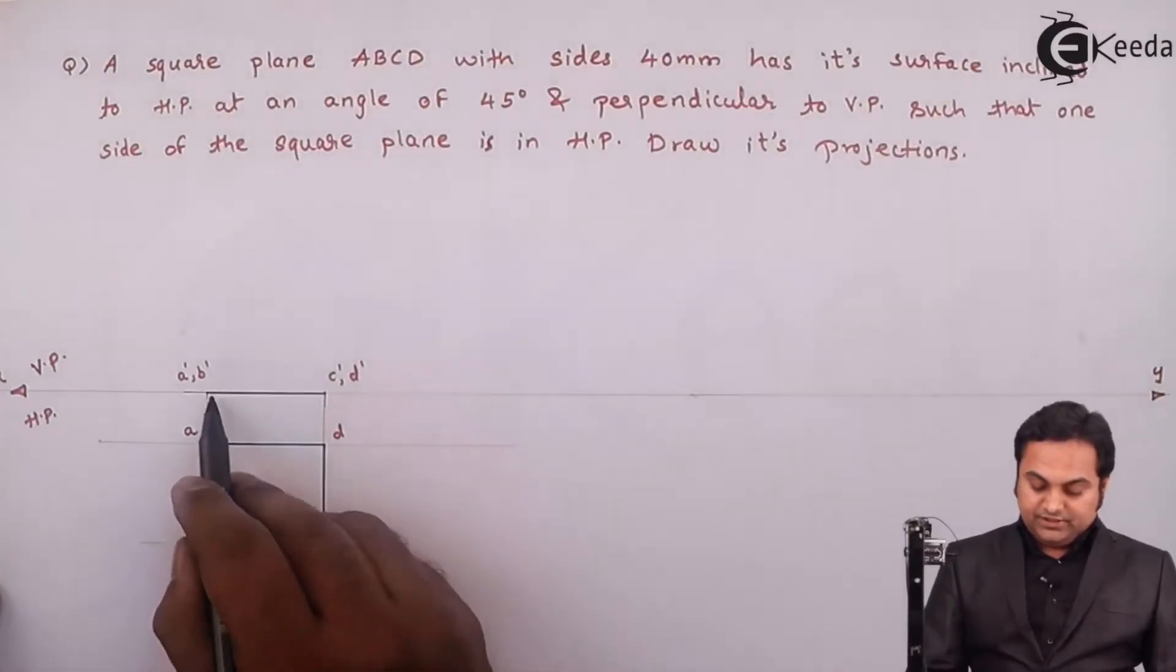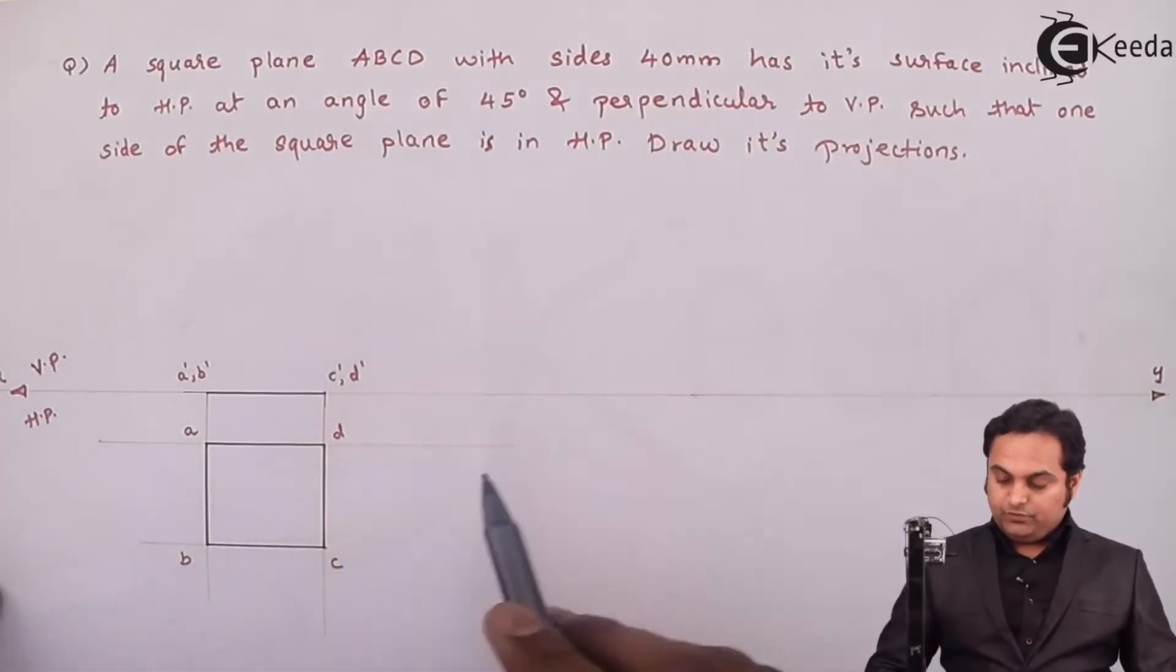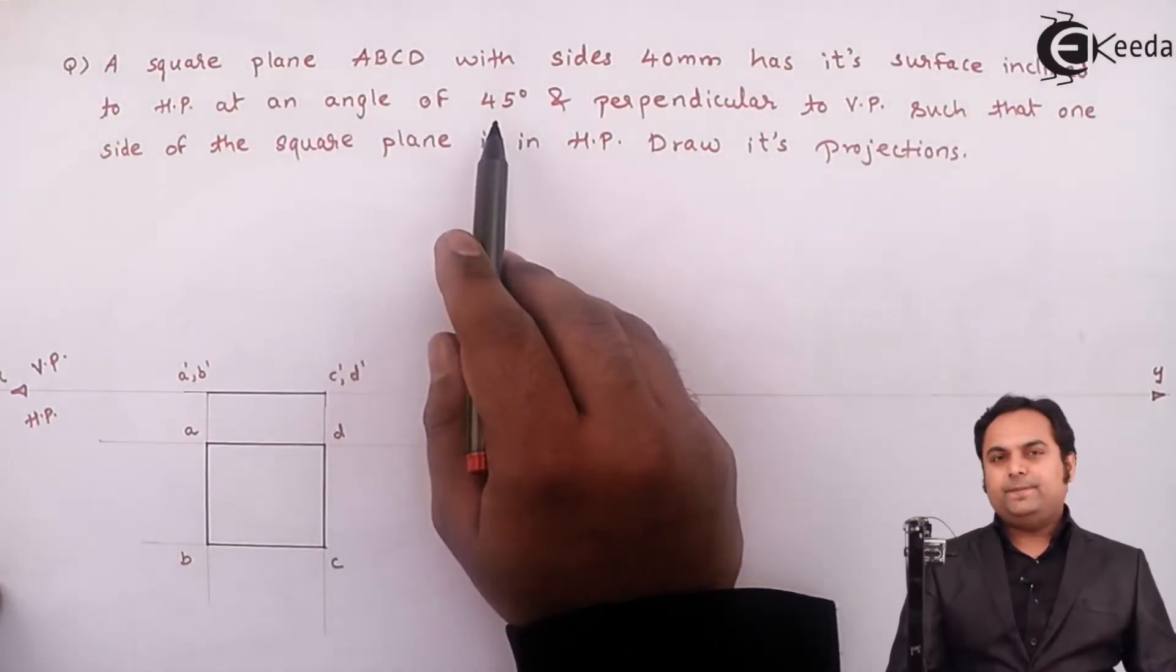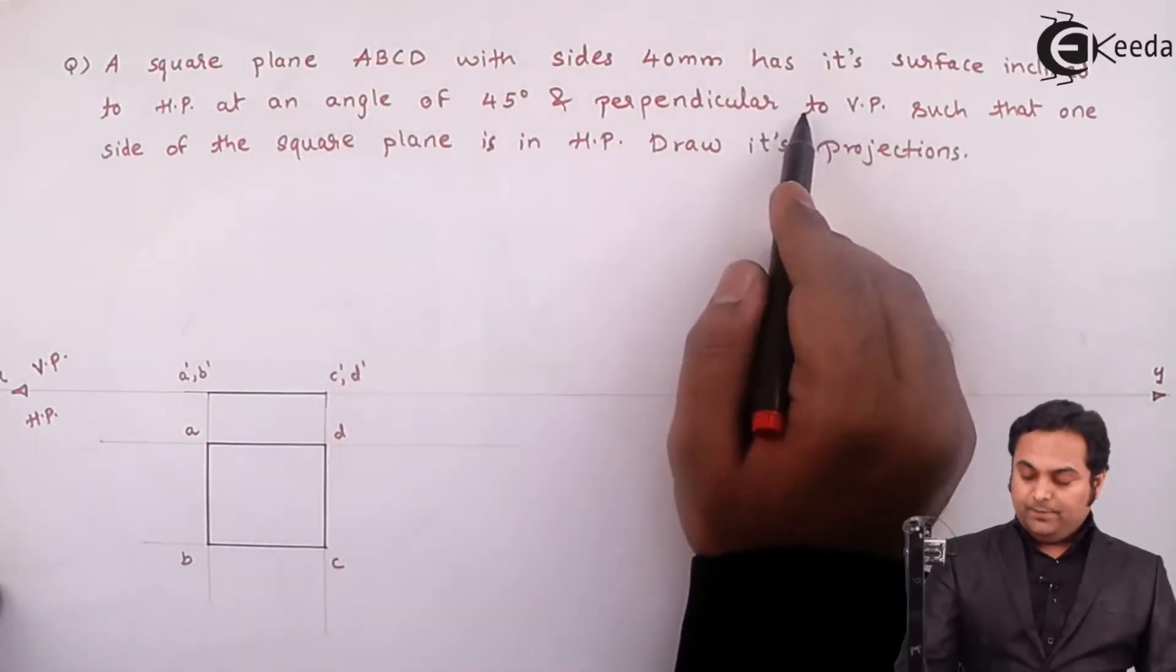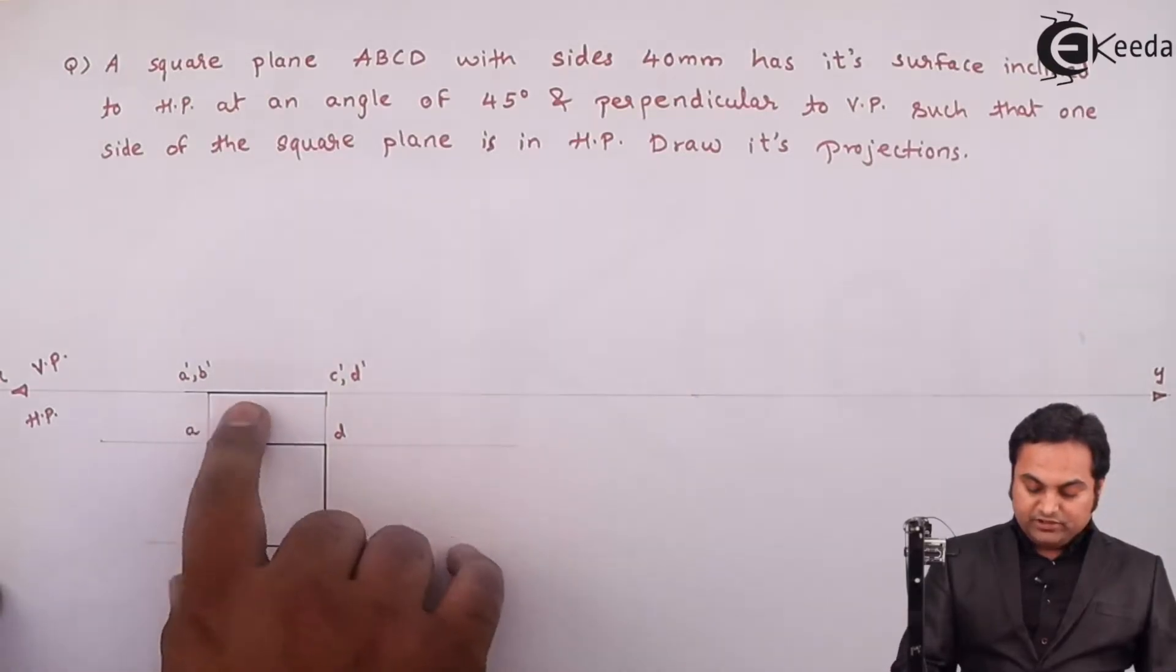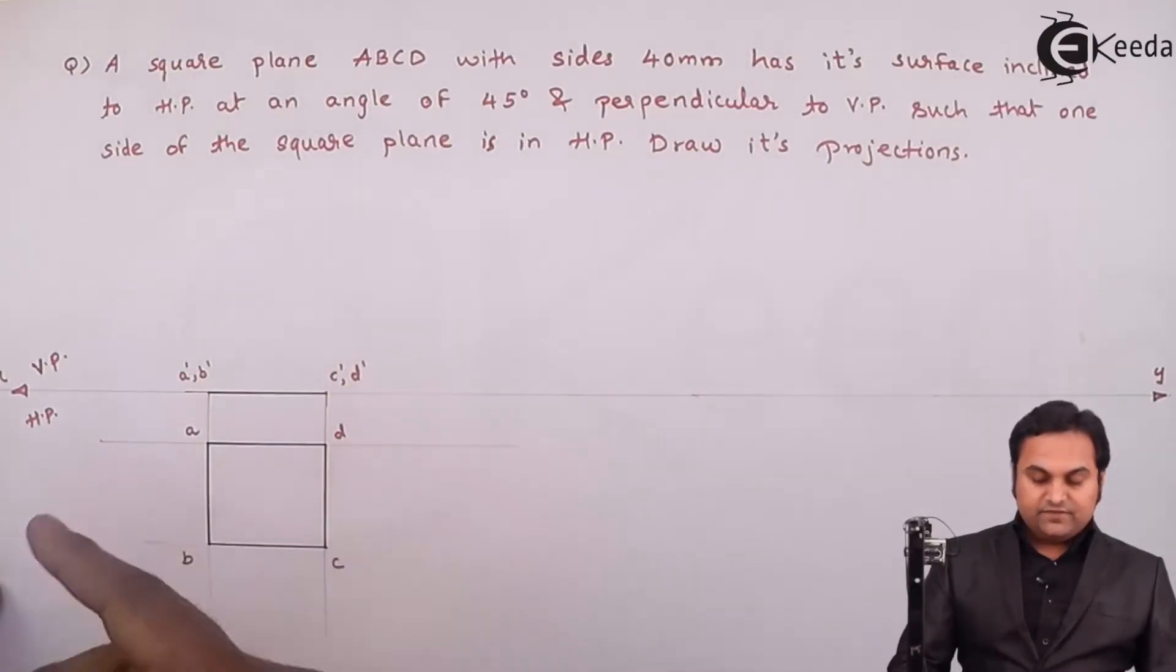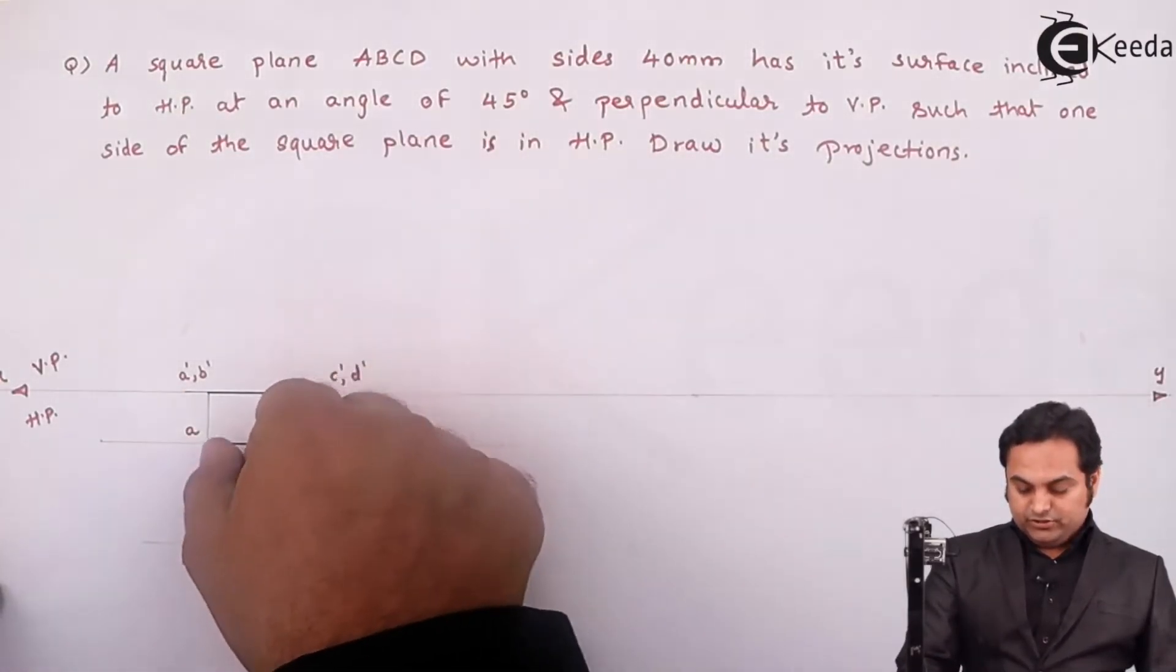If we see, this is the front view of the square plane and this is the top view. The condition is it has its surface inclined to HP at an angle of 45 degrees and perpendicular to VP. So if it is inclined to one plane and perpendicular to the other plane, I have to make this plane inclined. When it is appearing as a line in the front view, I have to tilt it keeping AB fixed and tilt this square inclined at 45 degrees.